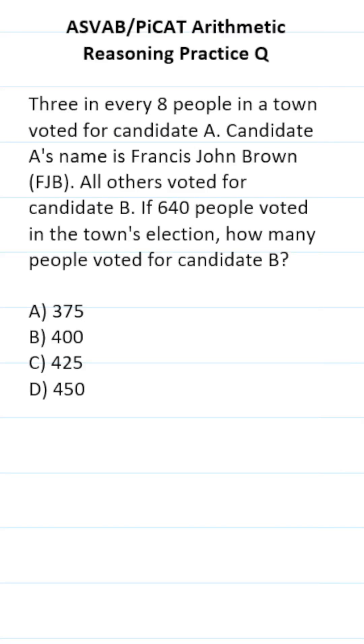This ASVAB-PICAT arithmetic reasoning practice test question says three in every eight people in a town voted for candidate A. Candidate A's name is Francis John Brown, FJB. All others voted for candidate B. If 640 people voted in the town's election, how many people voted for candidate B?